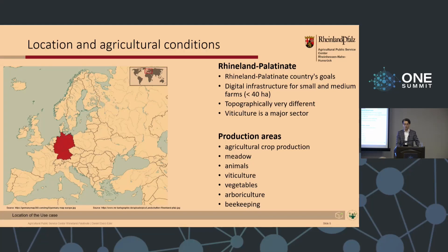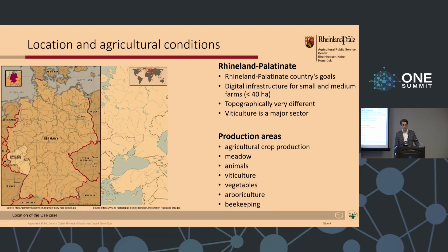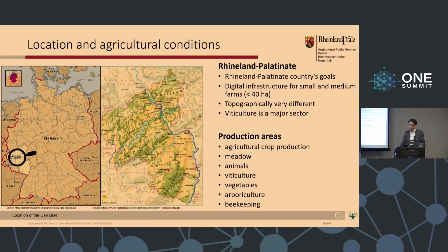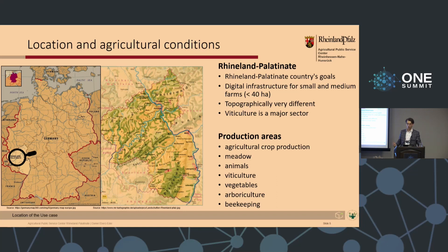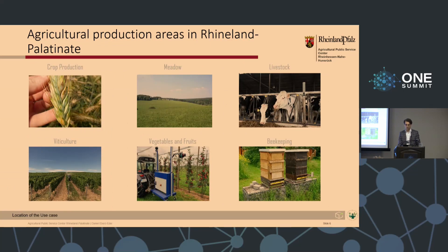Where do I come from? Germany is located in Europe and is the most populous country in the European Union. My home is Rhineland-Palatinate in Germany. What we are doing is we want to build a digital infrastructure with applications that are accessible to all farmers. From a geographical perspective, Rhineland-Palatinate is very diverse, and this has an impact on agricultural production. Here you can see an overview of the agricultural crops.